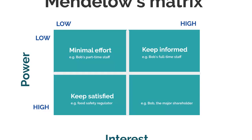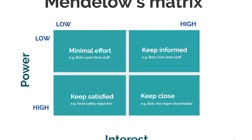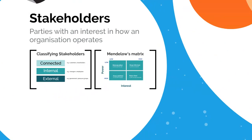Lastly, high power and high interest stakeholders might include the major shareholders of an organisation — in Bob's business it's Bob himself, but in a bigger organisation you might have a group of shareholders. You need to keep these stakeholders very close. You need to assume that this set of stakeholders are interested in everything you're doing. Regular communication has to be maintained and their goals, objectives and needs are not just entertained but included as part of the strategy-setting process and your whole business approach. So when forming new strategies, you can use the matrix to work out which stakeholders' interests to incorporate and which you can leave to one side.